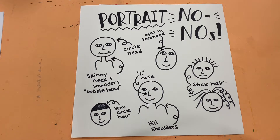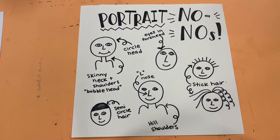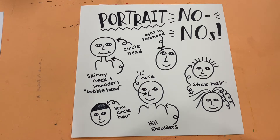Things like drawing the shape of a head as a circle, having the eyes all the way up at the top of the face in the forehead, drawing an L-shaped nose — I showed you last art class how to draw a more realistic nose. Today we're going to be talking about adding hair and the body. When we add a neck and shoulders, our neck is actually pretty thick, and our shoulders don't come up in these little hills that sometimes we do in elementary school.